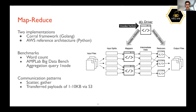The next function is MapReduce, a classic analytics function with two implementations: one in Golang using the Coral framework, and a Python implementation from AWS as their reference architecture for MapReduce. The easiest benchmarks to use are word count in both cases, as well as the AMPLAB Big Data Bench aggregation query — one of the academic queries for database performance evaluation.